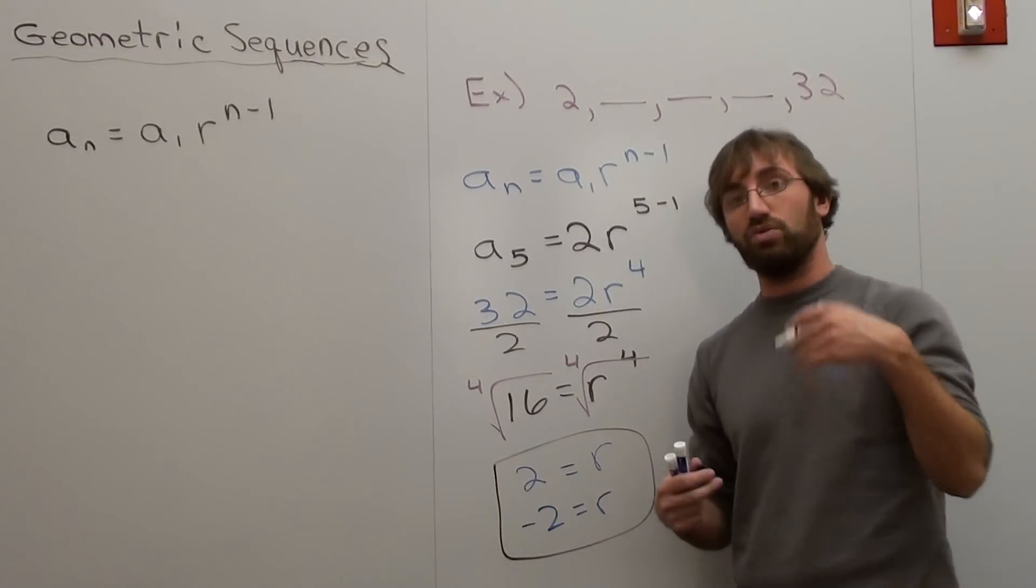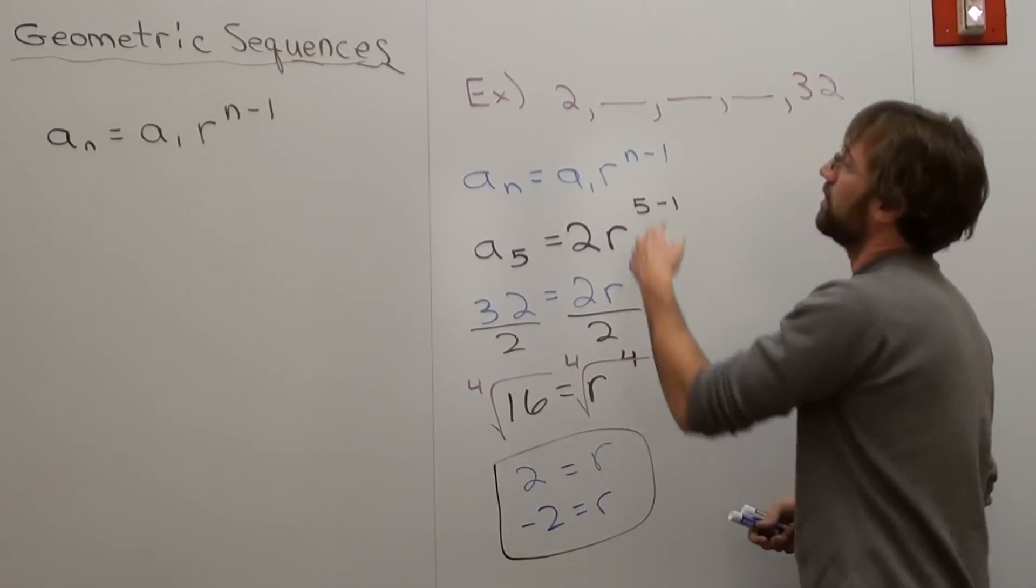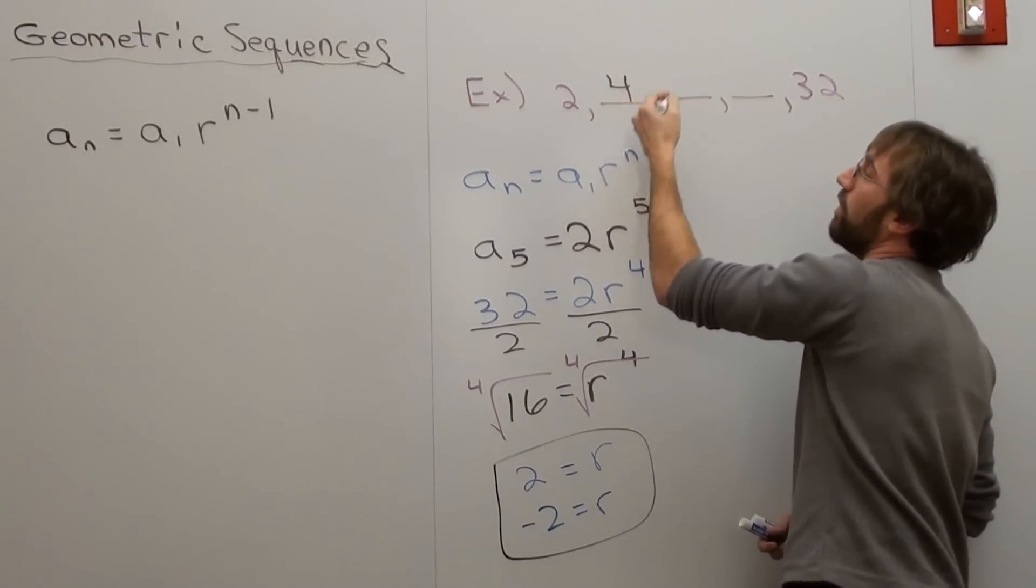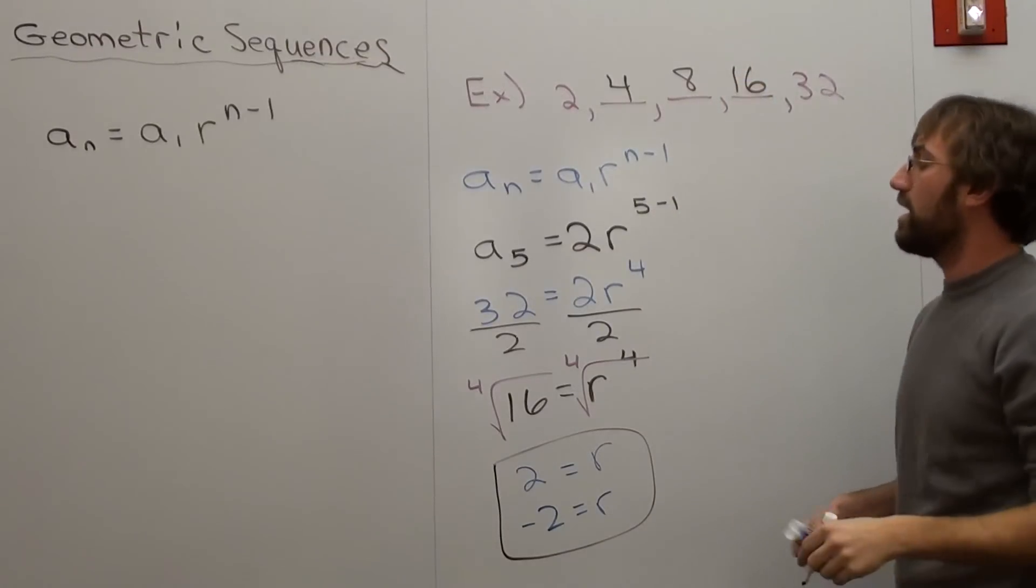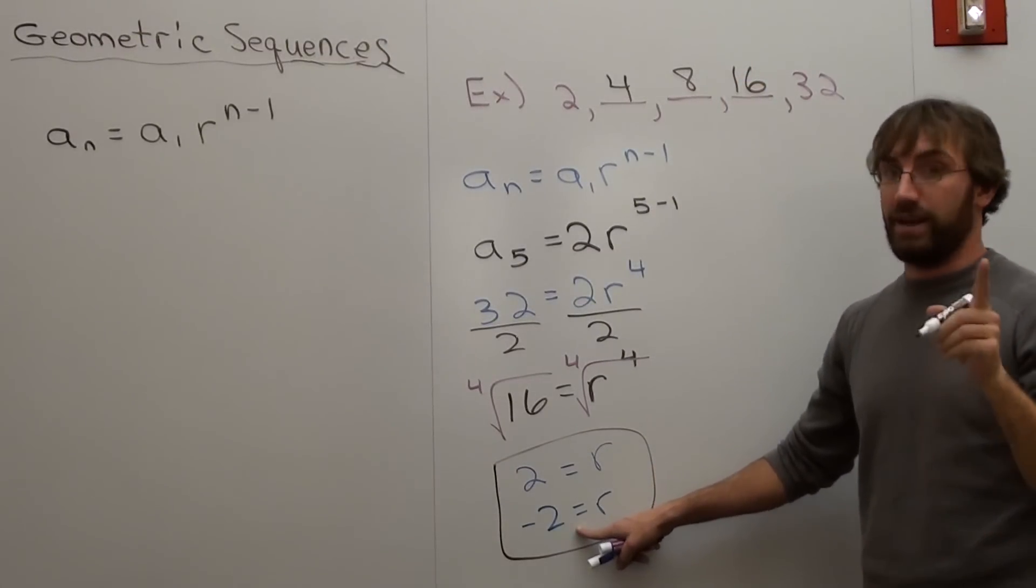The common ratio is 2, which means I'm multiplying 2 each time. So if I multiply 2, 4. Multiply 2, 8. Multiply 2, 16. But I can also multiply negative 2.